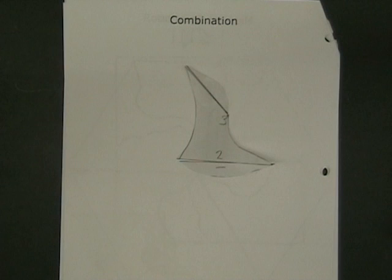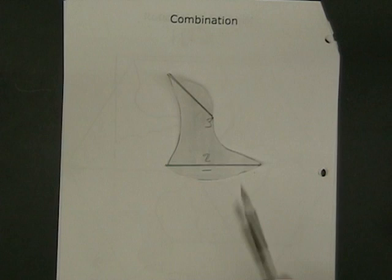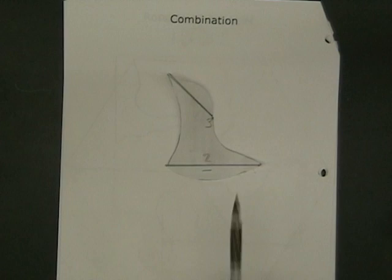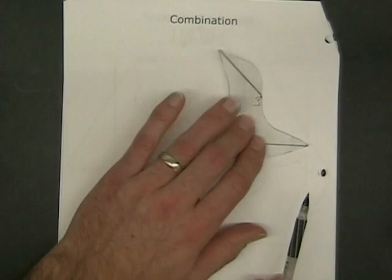The reason this is called a combination is because we have combined two different moves onto the same tile. We combined a midpoint rotation and a rotation about the vertex. A combination gives us very unique designs. This tile will also tessellate the plane.